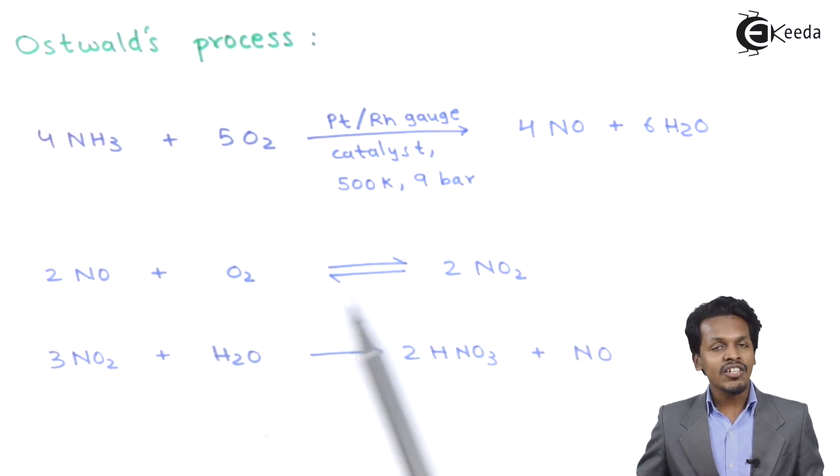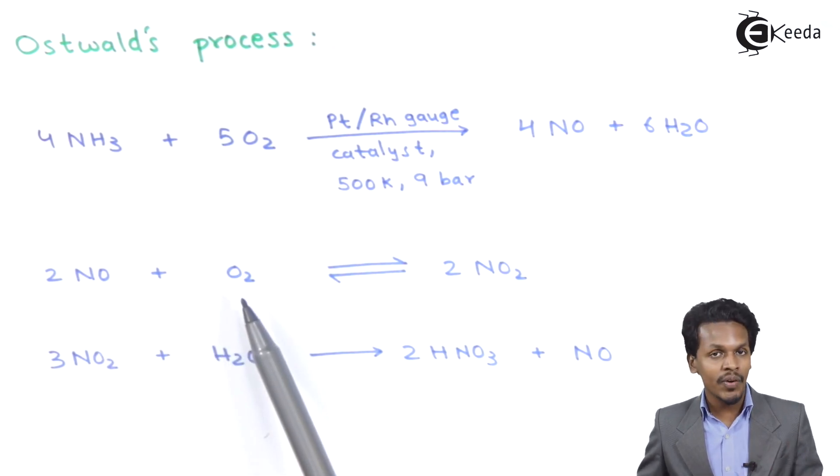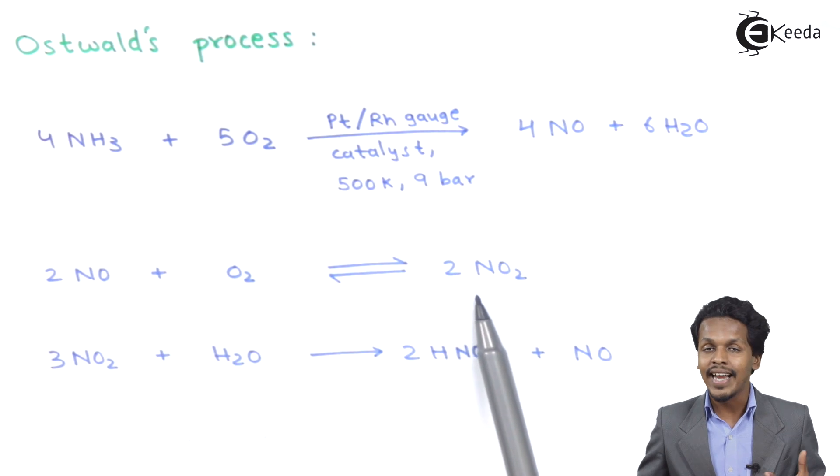The reaction proceeds such that 2 moles of nitric oxide are reacted with oxygen to obtain 2 moles of NO2, nitrogen dioxide.